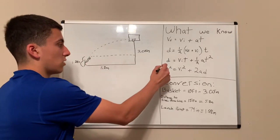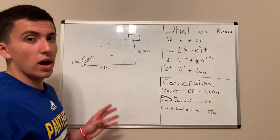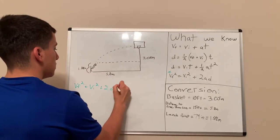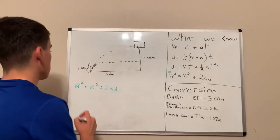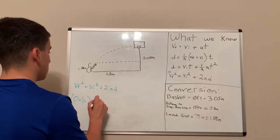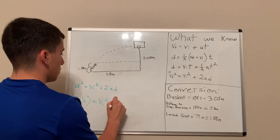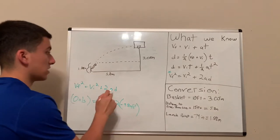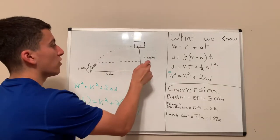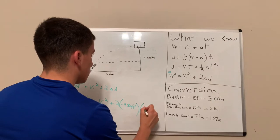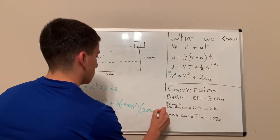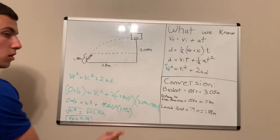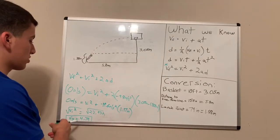With this information, we can use this equation to figure out the velocity in the y-direction. We have V_f² = V_i² + 2aΔd. The final velocity is 0 meters per second, the acceleration is -9.8 m/s², and the distance is from the basket to the release point: 3.05 meters minus 1.88 meters. After doing the math, I come out with the velocity in the y-direction of 4.79 meters per second.